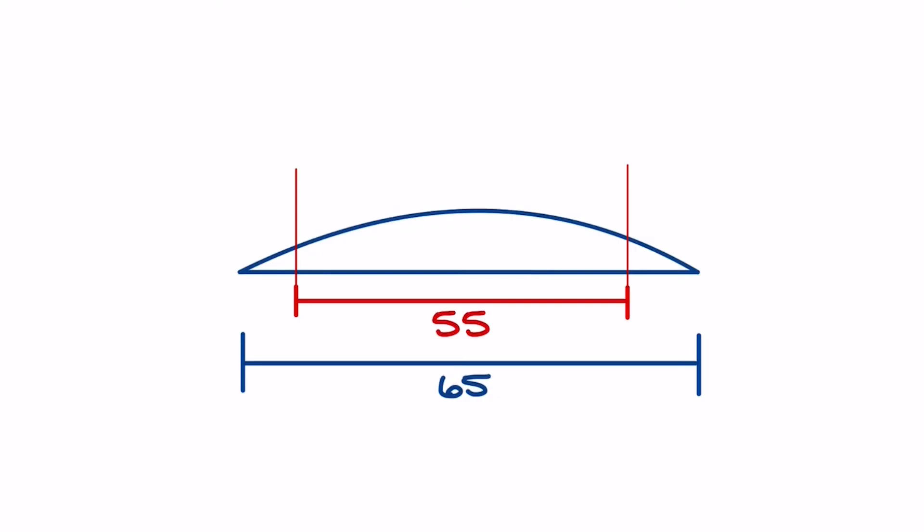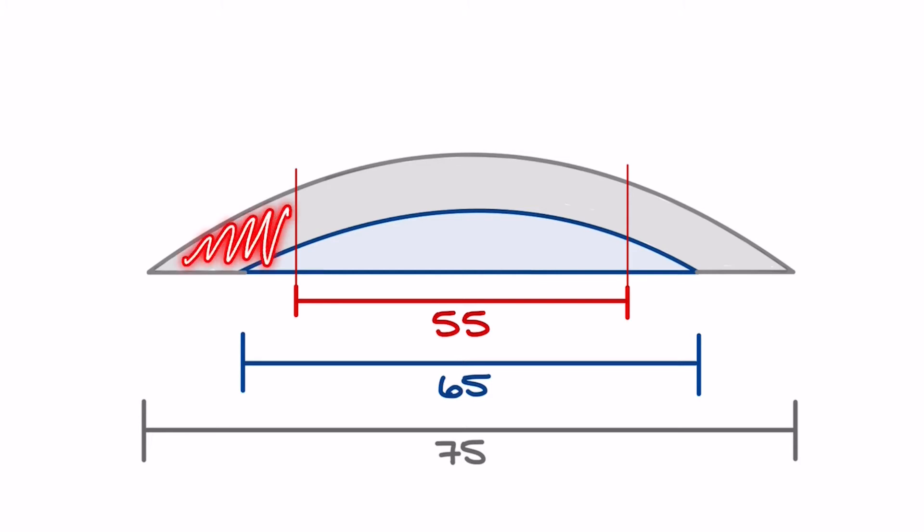For plus lenses, it does. As the diameter increases, the overall lens thickness increases. When a plus lens is edged, it only gets thicker. If the blank size varies too much from what was required by the order, the final lens will have significantly more thickness than is necessary.